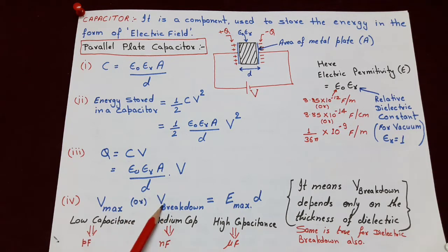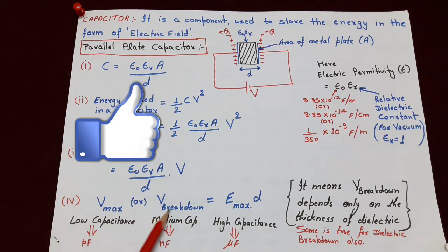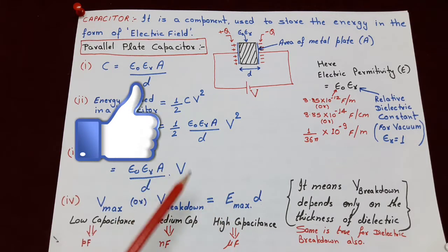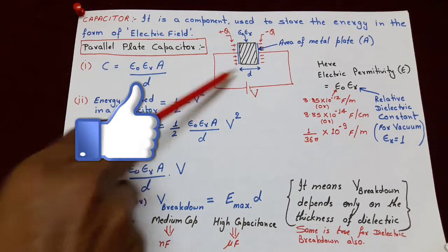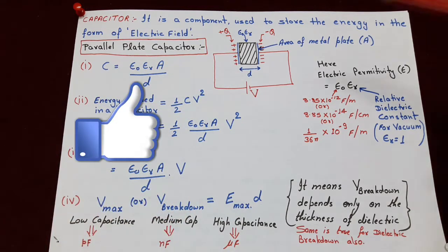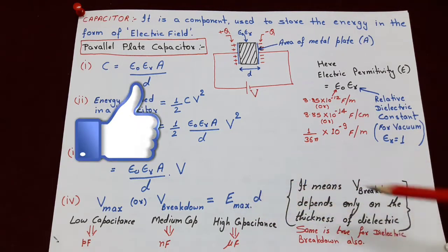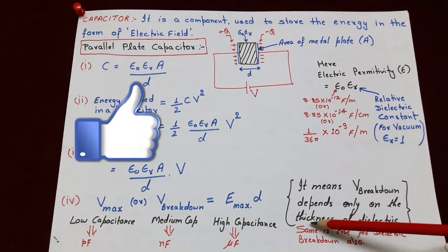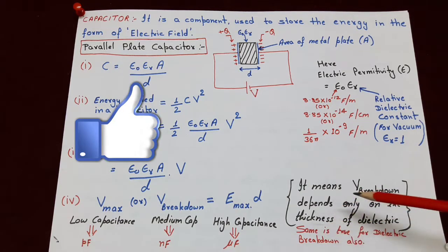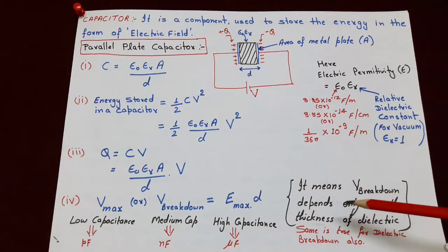The next thing is related to dielectric breakdown — or in this case we can say capacitor breakdown. Jo voltage jis par capacitor ka breakdown ho jayega, that is equal to the maximum electric field that can be tolerated by the particular dielectric, multiplied by the thickness of the dielectric — here the separation between the plates, means E-max into small d. Yahan dhyan dene wali baat yeh hai ki jo dielectric breakdown voltage hoti hai, wo kewal dielectric ki thickness par depend karti hai, na ki us dielectric ki lambai-chaudai yani ke uske area par.